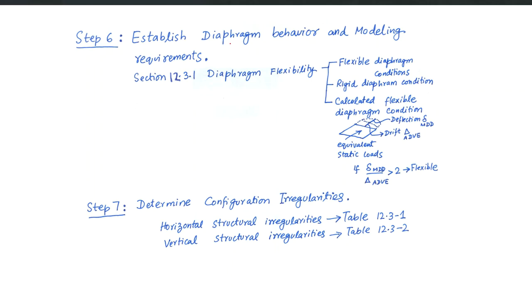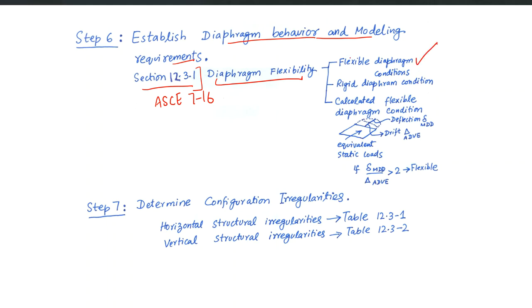Step 6 is the establishment of diaphragm behavior and how you are going to model your diaphragm. Section 12.3.1 of ASCE 7-16 guides us about diaphragm flexibility. Our floor diaphragm can be flexible or it can be rigid, and this is a decision we have to make at this particular stage. There is a calculation which can guide us whether we should go for a flexible or rigid diaphragm.